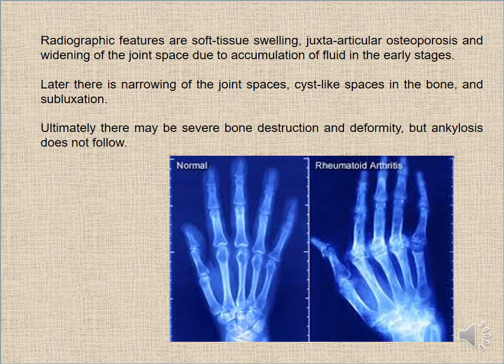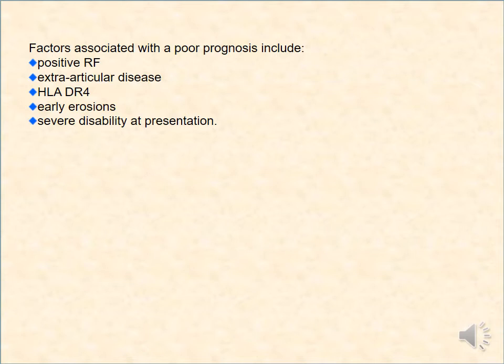The radiographic features show soft tissue swelling and widening of the joint space due to accumulation of fluid in the early stage. Later there is narrowing of the joint space, bone erosion, and subluxation. Ultimately there may be severe bone destruction and deformity, though ankylosis does not usually follow. Factors associated with prognosis include positive rheumatoid factor, extra-articular disease, HLA-DR4, early erosions, and severity at first presentation.